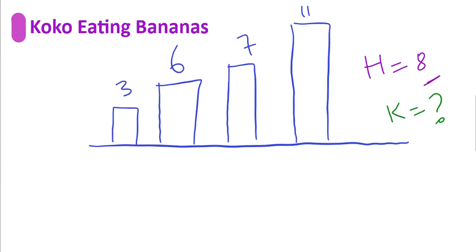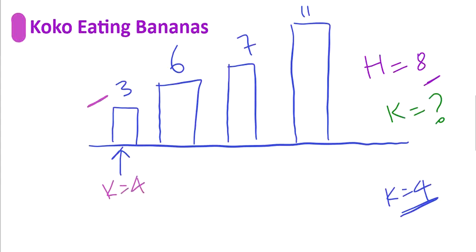Let's consider Koko starts eating from the first pile. The first pile has 3 bananas. Let's say k equals 4, meaning Koko can eat 4 bananas per hour. Though she can eat 4 bananas per hour, there are only 3 bananas in the first pile. Koko cannot move to the next pile — she must wait in the same pile for that hour and move to the next pile in the next hour. So she finishes the first pile in the first hour and waits till that hour is over.